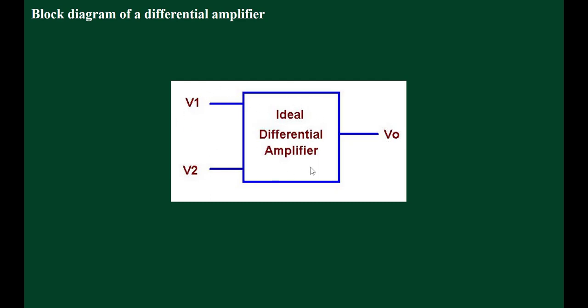In an ideal differential amplifier, the output voltage V0 is proportional to the difference between the two input voltages, which means that the higher the difference between the two inputs, the higher the output voltage. As the name implies, this circuit amplifies the difference between the two input signals. The equation is very easy: the output voltage is equal to differential gain times V1 minus V2.